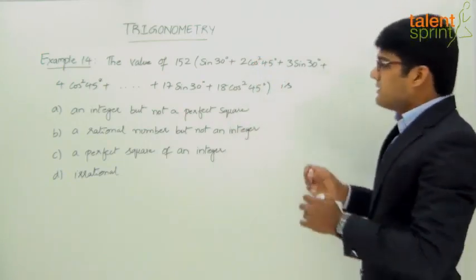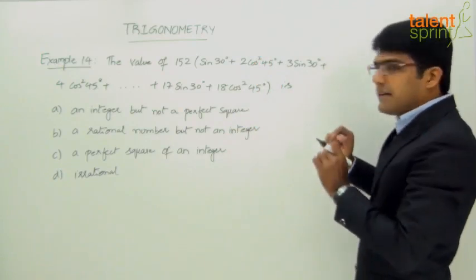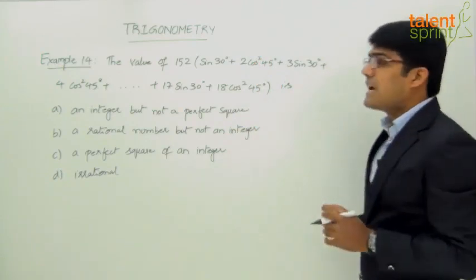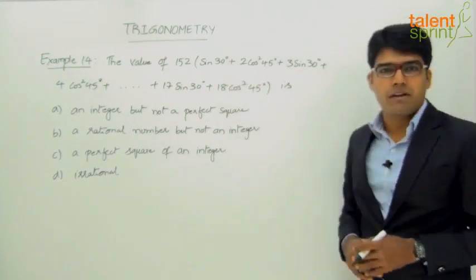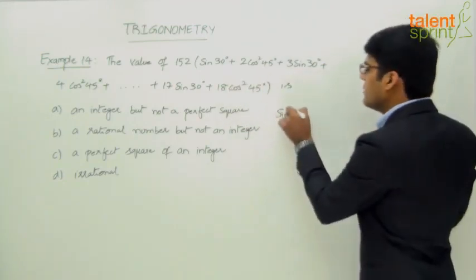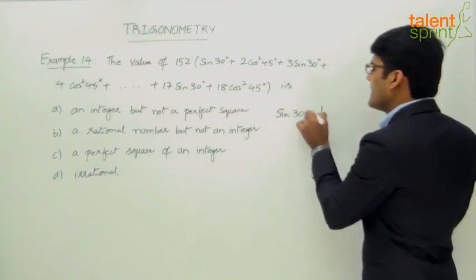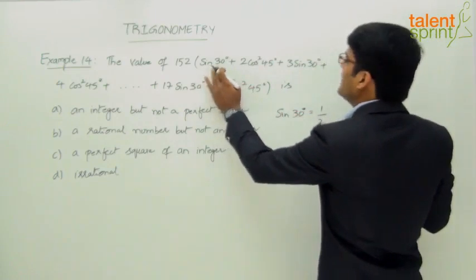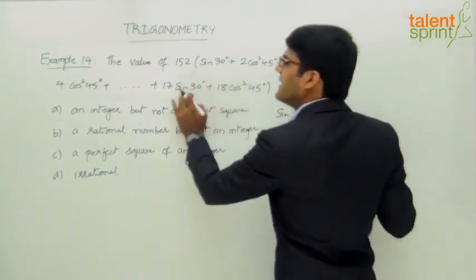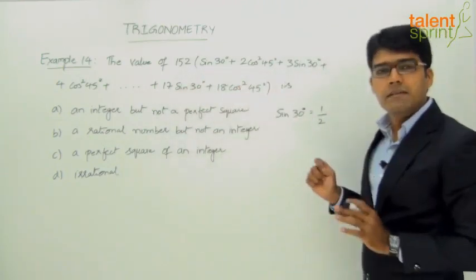Now if you observe, though it looks to be a little complicated, solving that shouldn't be difficult because we know what sin 30 and cos 45 are. Sin 30 degrees is 1 by 2. In each of the terms we have sin 30, 3 sin 30, 17 sin 30. We can just replace sin 30 with 1 by 2.